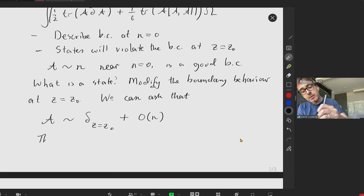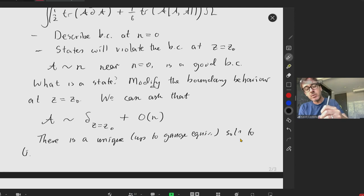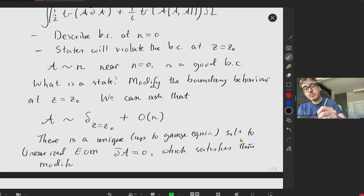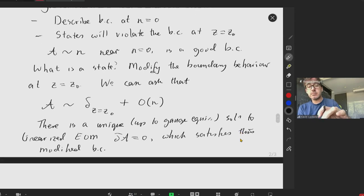And we can find such a thing. You can show that there is a unique, up to gauge equivalence, solution to the linearized equation of motion, which is just the d-bar equation, which satisfies this modified boundary condition.